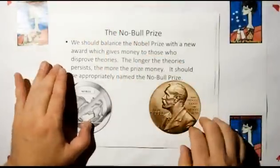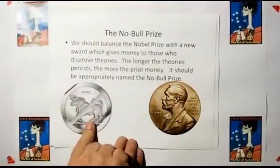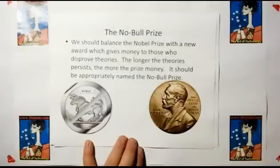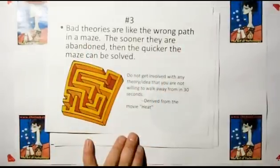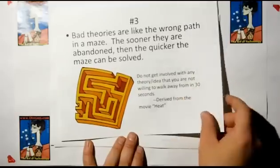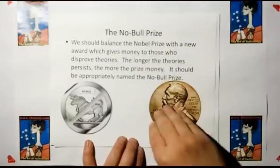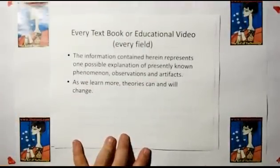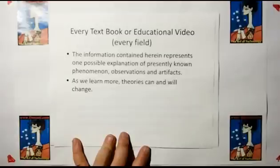We should complement the Nobel Prize with a new Nobel Prize — give out awards for people who disprove theories of physics, because that will get us down the maze of science faster. Remember rule of acquisition number three: bad theories are like the wrong path in a maze. The sooner they are abandoned, the quicker we can solve the maze. Don't get involved with any theory idea that you're not willing to walk away from in 30 seconds. Every textbook or educational video should have the following disclaimer: 'The information contained herein represents one possible explanation of presently known phenomena, observations, and artifacts. As we learn more, theories can and will change.'